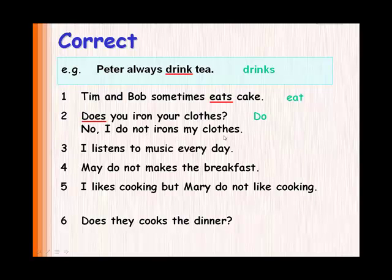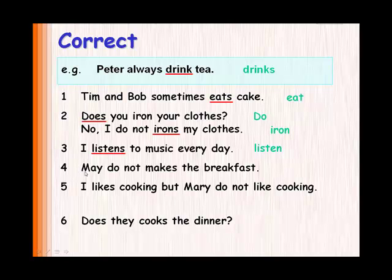I do not irons my clothes — do not is correct, you may find do not or don't, they're exactly the same. But irons is wrong because we don't need an S with negative sentences. I do not iron my clothes. I listen to music every day — listen is correct, we don't need an S here. May do not makes the breakfast — May is a name, so it must be he or she. Do is wrong, and makes is also wrong. May doesn't make the breakfast.